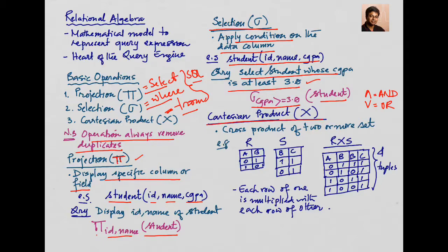The last basic operation is the Cartesian product, which means a cross product. The Cartesian product means you are multiplying two or more relations — it is a cross product of two or more sets. For example, we have two sets R and S, each with two data columns. With two tuples in R and two tuples in S, the Cartesian product will produce two times two, giving four tuples, and all columns from both sets come together.